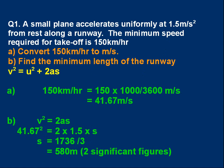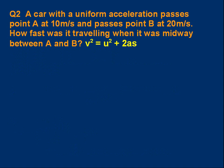Let's do one more question, which is a harder one. Question 2: A car with a uniform acceleration passes point A at 10 m/s and passes point B at 20 m/s. How fast was it traveling when it was midway between A and B? You may instinctively think 15 m/s, but that's not the correct answer. Pause the video, read it through again, and have a go.